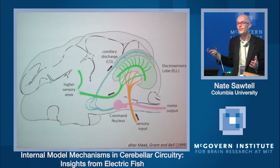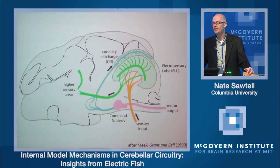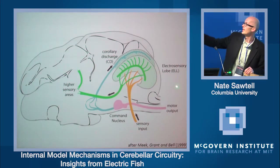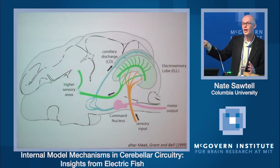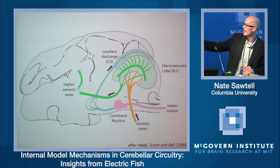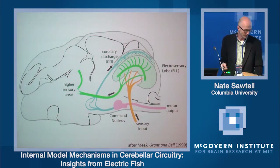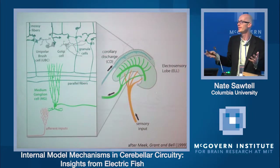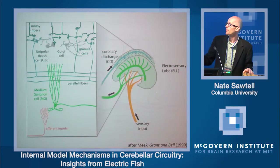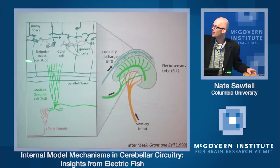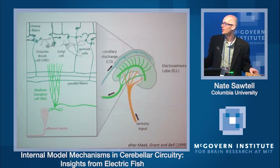A lot is done at the very first stage of electrosensory processing in a central brain structure called the electrosensory lobe, or ELL. The two major inputs to ELL are sensory input from receptors on the skin, and also a corollary discharge — a copy of the motor command that discharges the electric organ. The motor command nucleus sends a command down the spinal cord to the electric organ in the tail, and also a copy up into ELL. A main site of integration of the electrosensory and corollary discharge inputs are cell types called medium ganglion cells.